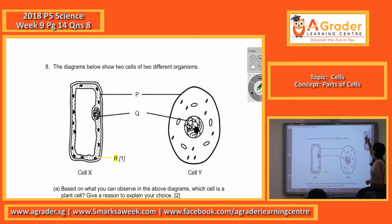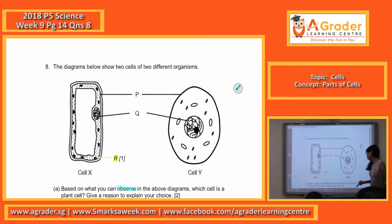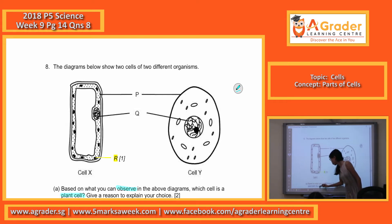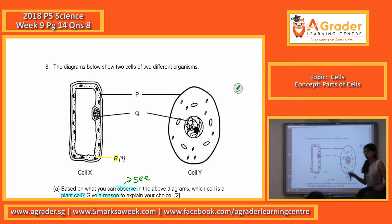Based on what you can observe in the above diagram, which cell is a plant cell, and you have to give a reason to explain your choice. Take note — when it says 'what can you observe,' it means anything that you can see in the diagram above. So which one do you think is a plant cell?